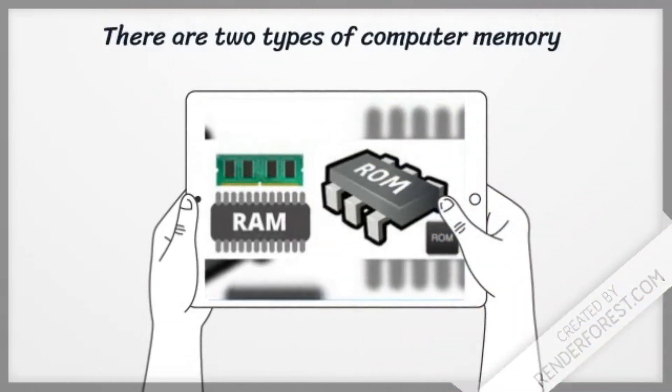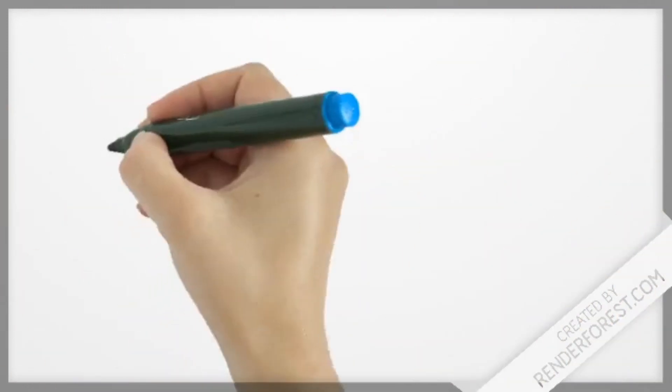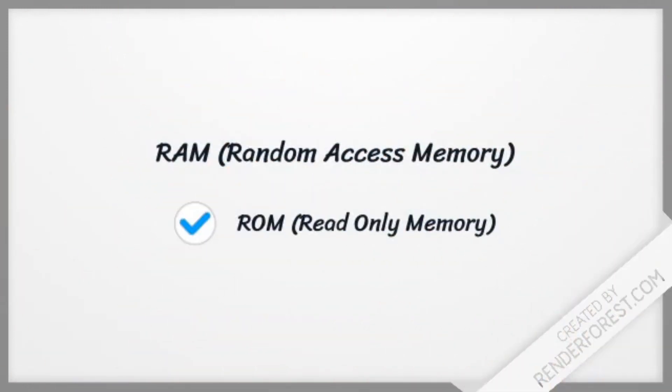There are two main types of computer memory: RAM (Random Access Memory) and ROM (Read Only Memory).